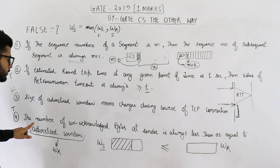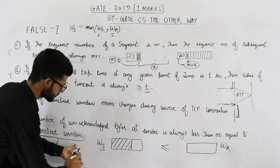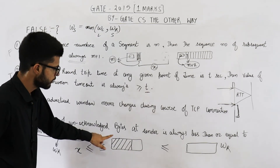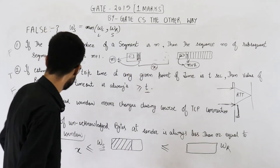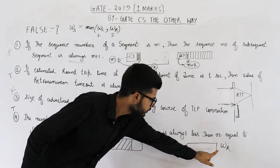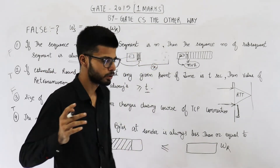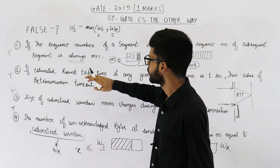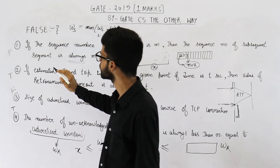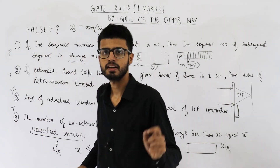So if X is the number of unacknowledged bytes, X ≤ WS (sender window), and WS ≤ WR (advertised window). Therefore X ≤ WR, confirming statement 4 is true. Since we were asked which statements are false, the answer is statements 1 and 3 are false.